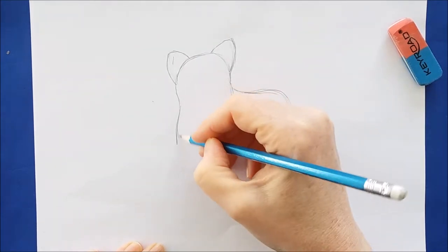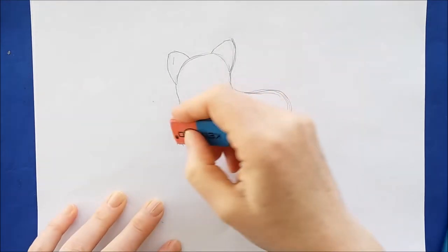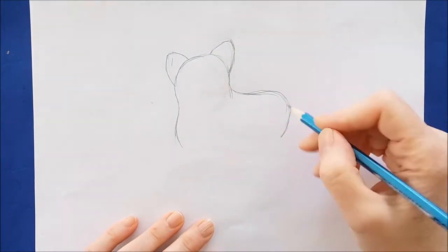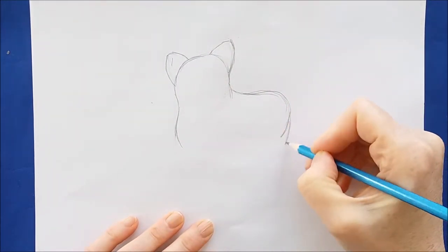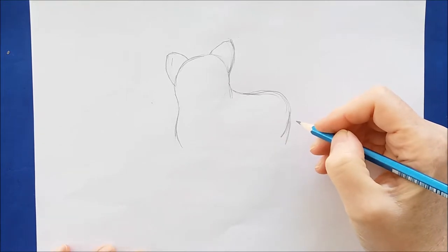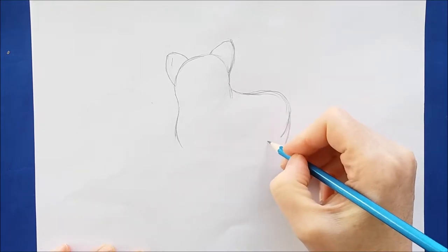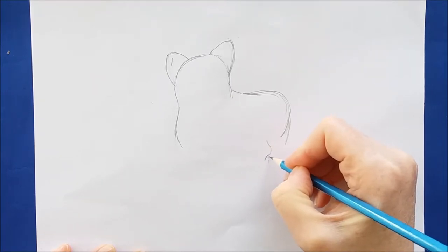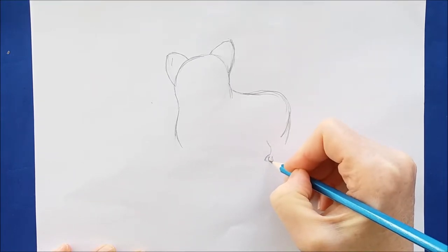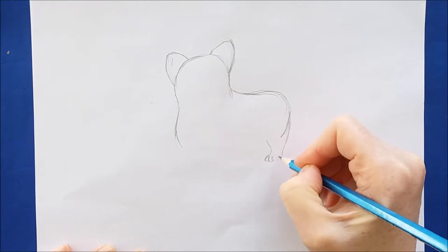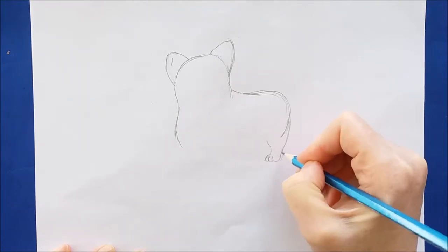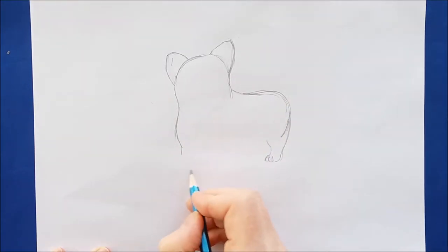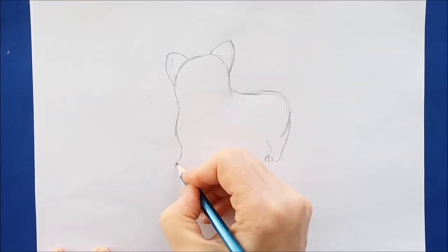And then we'll draw a downward line from the cheek of the corgi. This is the front of the corgi. And because corgis are short little dogs, we're going to make the legs short. They have short little legs. So I'm just drawing two downward lines and then a couple rounded lines for the toes of the corgi.